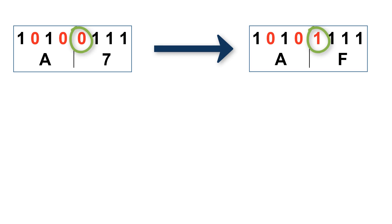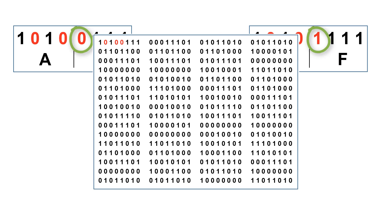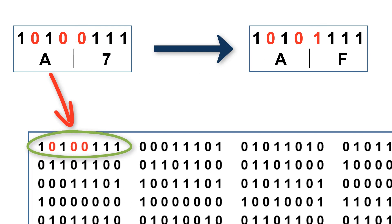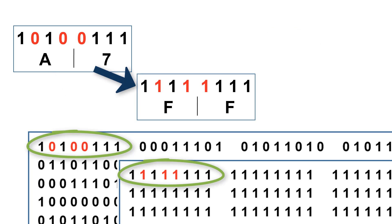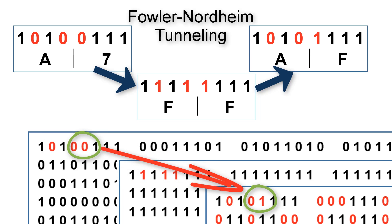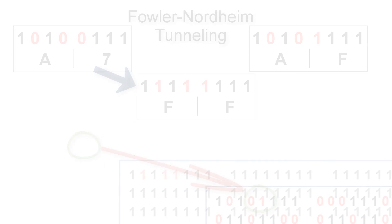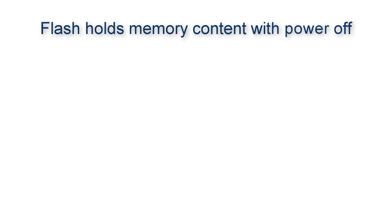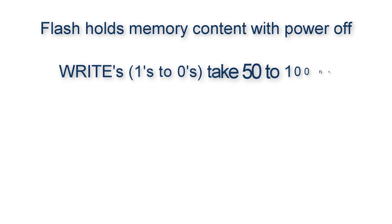But the second time through, if you ever want to change this byte from, say, A7 to AF — so just this one bit needs to move back from zero to one — things slow down. Not just this byte, but the whole section of the IC will need to be erased and all the content copied in again with just this one bit changed. To understand why, you might want to watch our video on Fowler-Nordheim tunneling.